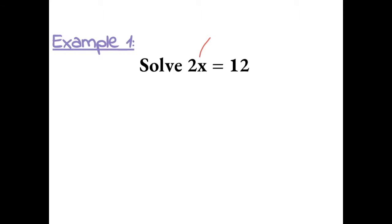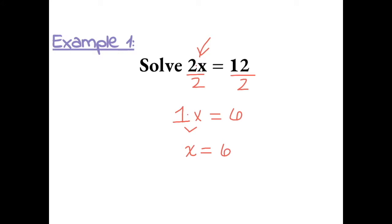Remember that a number next to a variable represents multiplication. The inverse operation of multiplication is division. To get the variable x by itself, we divide both sides by 2, because then the 2 over 2 equals 1. So x equals 12 divided by 2, which is 6. One times x just equals x, so x equals 6.